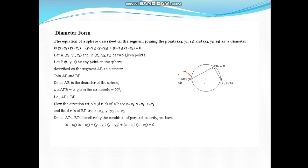Now next form is diameter form. Let us suppose that A(x₁, y₁, z₁) and B(x₂, y₂, z₂) are the endpoints of a diameter. So they are given points. Let P(x, y, z) be any point. Just join AP and BP.